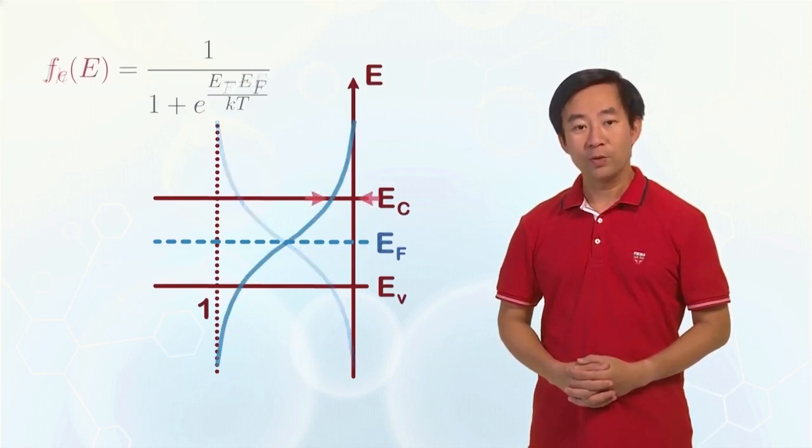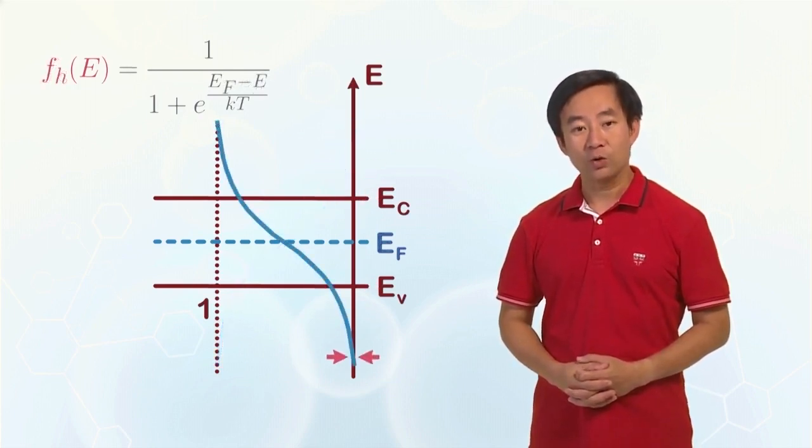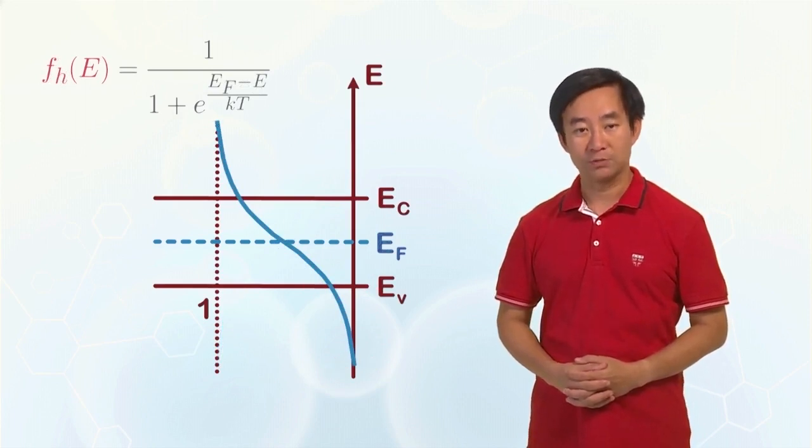Generally, we use the symbol f_e(E) to denote the Fermi-Dirac functions for electrons, and f_h(E) to denote the Fermi-Dirac functions for holes.